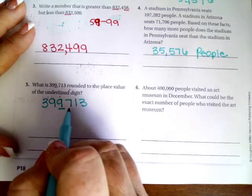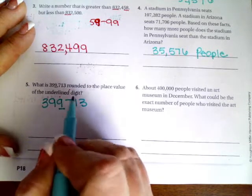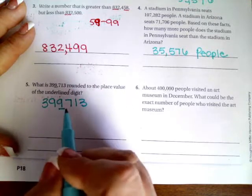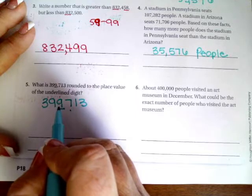If the number next to it is a zero, one, two, three, or four, then the nine will stay the same. If it is a five, six, seven, eight, or nine, it will go up. And that's a seven, which means that my nine has to go up, but I can't just write a 10 there.